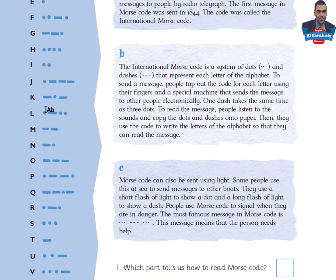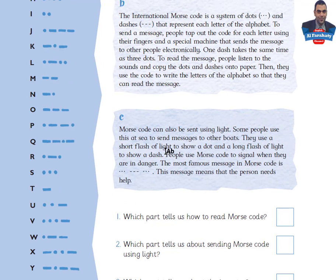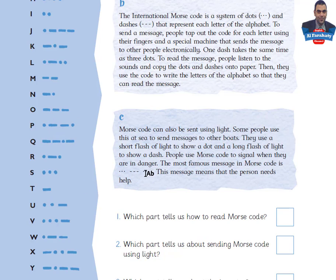Part C. Morse code can also be sent using light. Some people use this at sea to send messages to other boats. They use a short flash of light to show a dot and a long flash of light to show a dash. People use Morse code to signal when they are in danger. The most famous message in Morse code is three dots — S, three dashes — O, three dots — S. SOS. This message means that the person needs help.